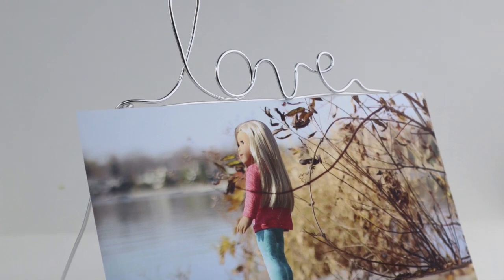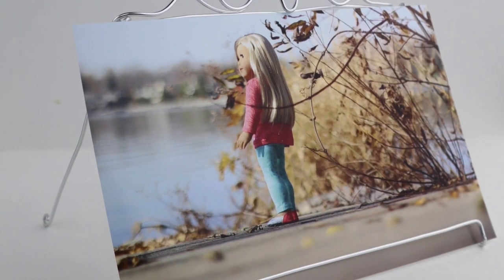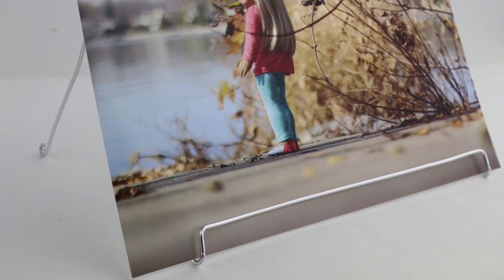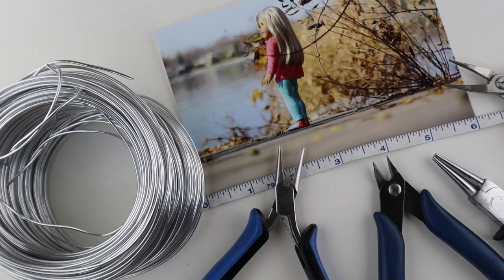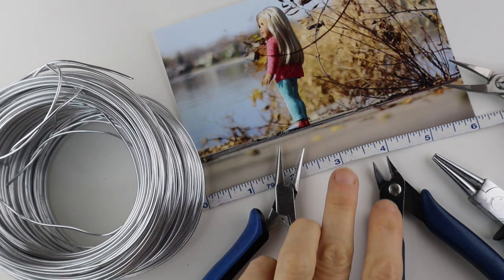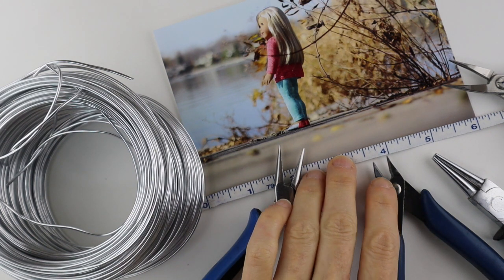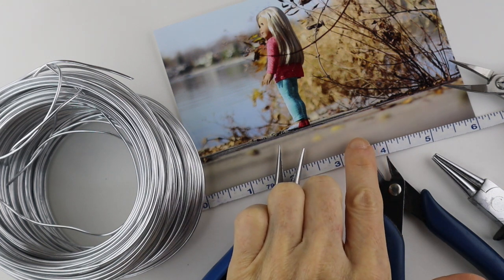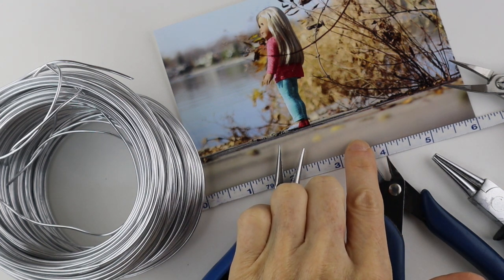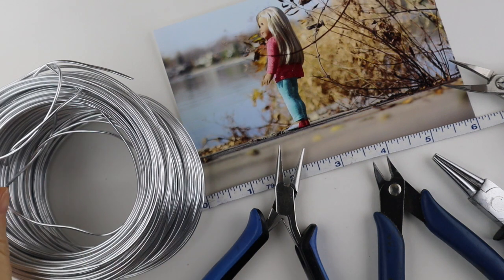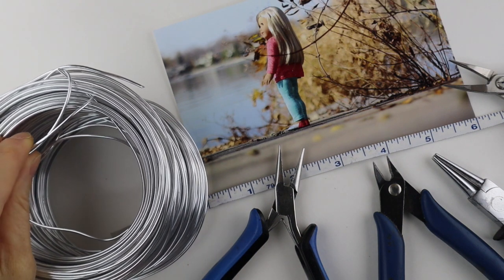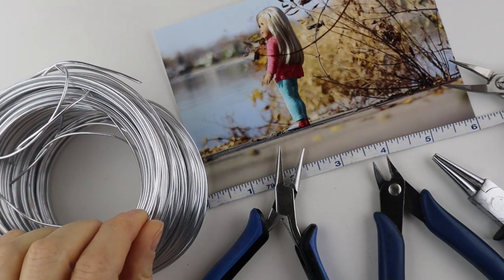Hey there, Heather Boyd Wire here. Today I'm going to show you how to make a really cool personalized photo holder out of wire. What you're going to need for this project are your tools, you'll need a ruler or tape measure. I'm using a regular size 4x6 photo as the base and I'm using this 1.5 millimeter aluminum wire which is quite soft and easy to work with.